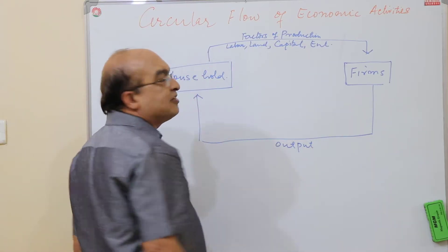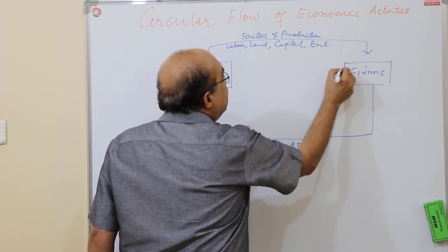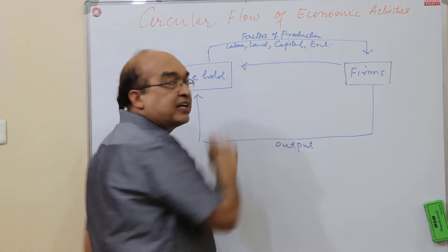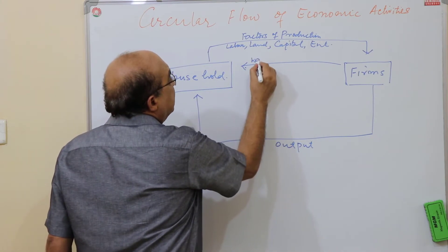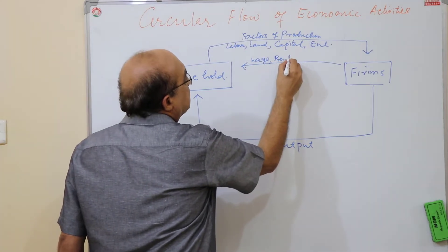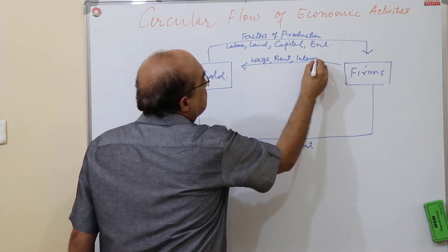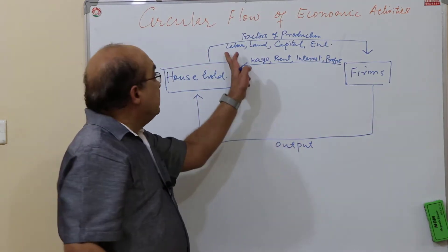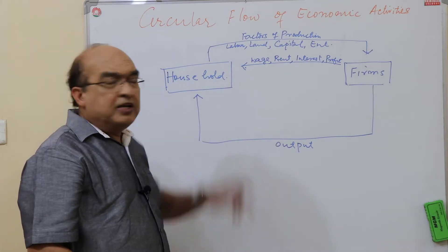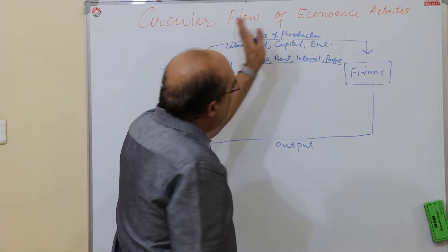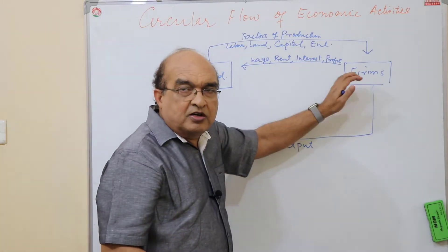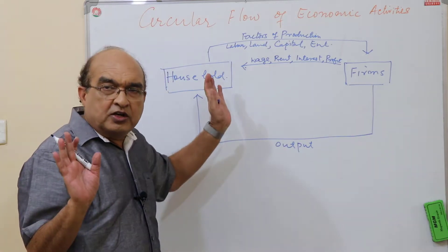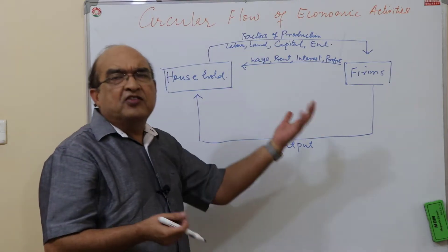In the monetary flow, in lieu of these factors of production, it is the firm that provides the household with the remuneration of these factors in the form of wages, rent, interest, and profit. This is the monetary flow. Factors of production are supplied to the firms and firms pay them in the form of remuneration. The profit that the entrepreneur pockets is the one flowing from firms to the household.